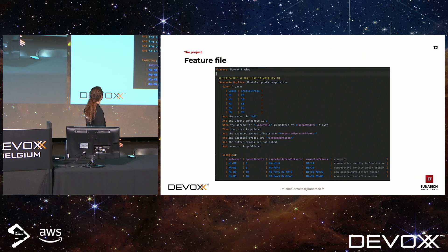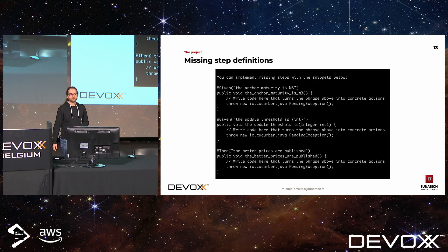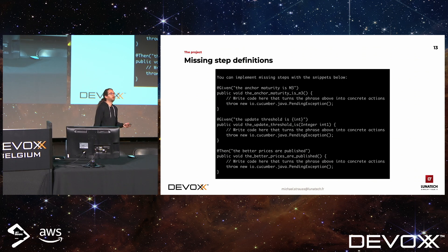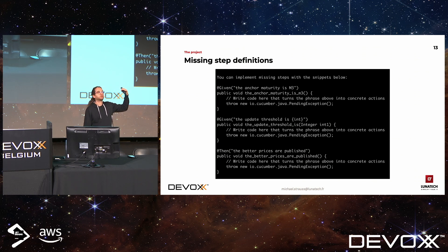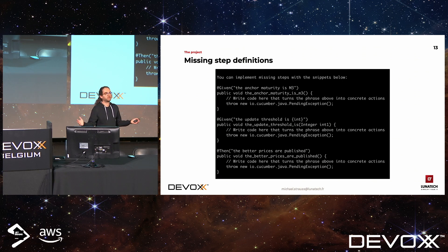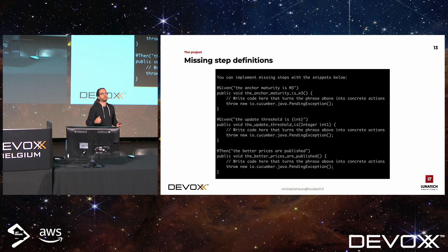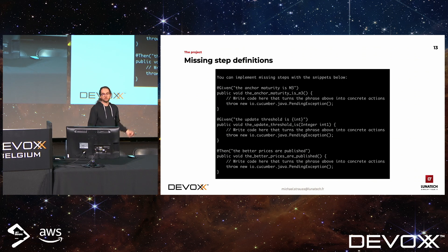We wrote our scenario, we launched it, but Cucumber was not happy — it complained about missing steps. Why? There is no magic behind Cucumber. When it executes a scenario, it goes step by step, and for each step it tries to find a piece of code to run. We define that piece of code as a method in our codebase, annotated with a regular expression that should match the step. Cucumber tries to find the matching annotation and runs the corresponding method if found — if not, it complains. But it's quite friendly because it provides us with templates to copy-paste into our codebase.